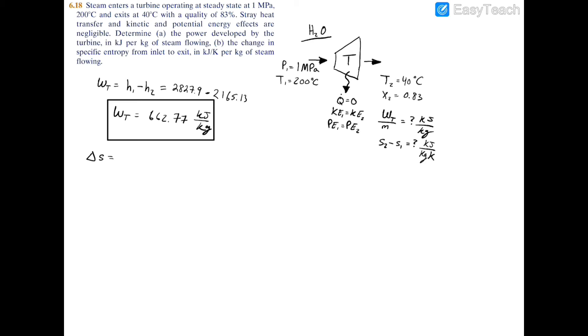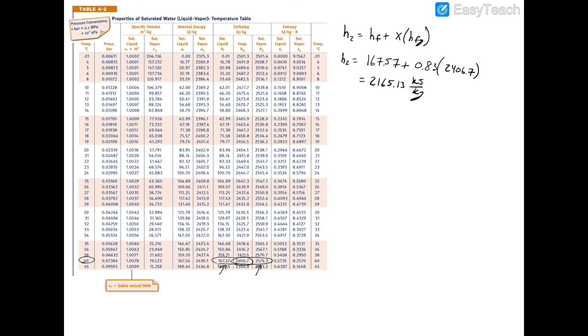Now we need to find the change in specific entropy, which is just going to be s2 minus s1. To find these values, we're going to use the property table once again. First let's find s2. We'll turn to table A2 and it's going to be the same thing as we did to find the enthalpy except now we're using the specific entropy values.